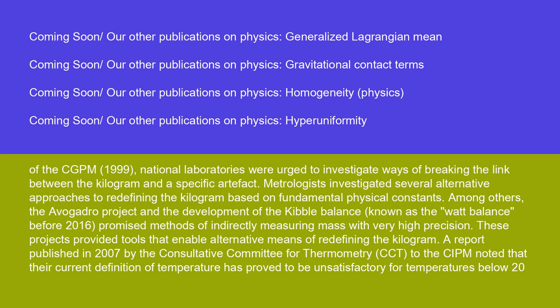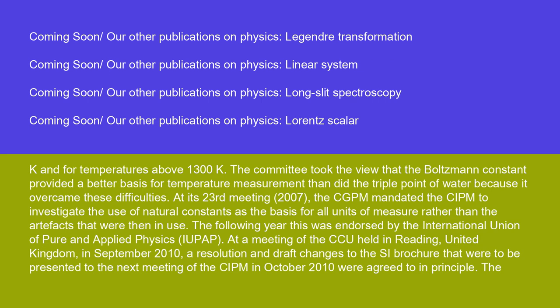Metrologists investigated several alternative approaches to redefining the kilogram based on fundamental physical constants. Among others, the Avogadro project and the development of the Kibble balance (known as the Watt balance before 2016) promised methods of indirectly measuring mass with very high precision. These projects provided tools that enable alternative means of redefining the kilogram. A report published in 2007 by the Consultative Committee for Thermometry (CCT) noted that the current definition of temperature proved unsatisfactory for temperatures below 20 K and above 1300 K.